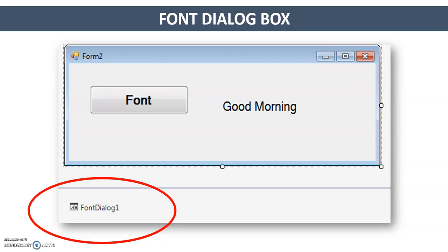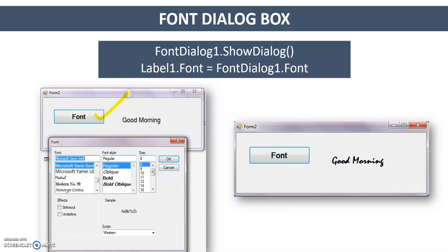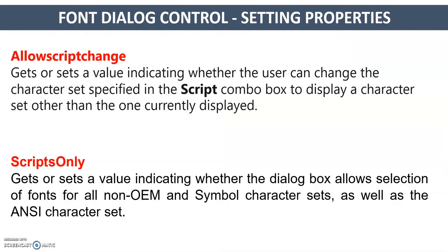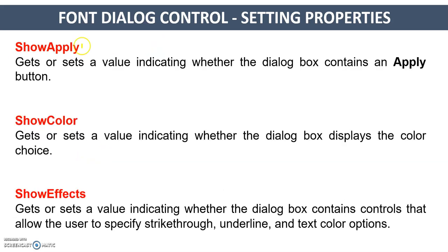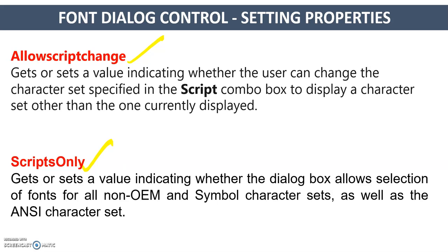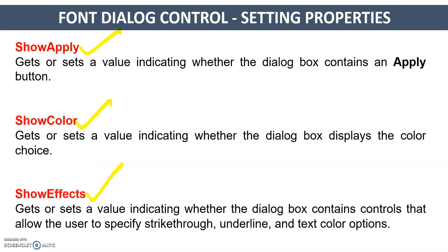To summarize the practical: you have one command button and one label. You add fontDialog1, and when you click the button you can see the effect on the label — whatever font you choose from fontDialog1. For that we use the ShowDialog method. You can also set properties like AllowScriptChange, ScriptsOnly, ShowApply, ShowColor, and ShowEffects.